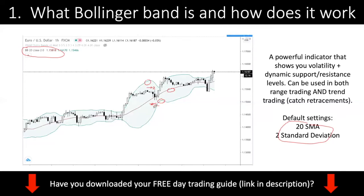The Bollinger Band can also show you the volatility of the market. When you see a very wide Bollinger Band — meaning the distance from the upper band to the moving average, or from the lower band to the moving average, is very far — that means the market is very volatile. Conversely, when the bands are very tight, this is known as a Bollinger squeeze, meaning the market is in a tight range with not much volatility.